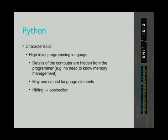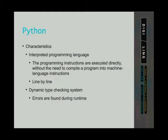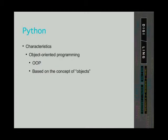High-level programming languages may also use natural language elements. Basically, a high-level programming language means that we don't have to give instructions to a computer using ones and zeros. An interpreted programming language is a language that executes a program line by line — it does not need to compile the whole program into machine language instructions before running it. When we say that a programming language has a dynamic type checking system, it means that errors are found during runtime, that is when the program is executed. Object-oriented programming, or OOP, is programming based on the concept of objects. Later, we'll explain some key concepts of OOP and what an object is.